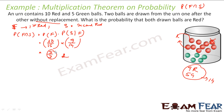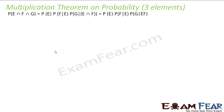Now we will take an example where we have three elements instead of two elements. So here we had only two elements F and S; now we will take examples where we have more than two elements.